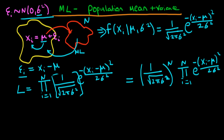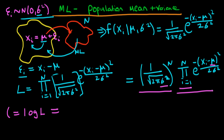When looking for maximum likelihood estimators for σ² and μ, it is easier to maximize the log-likelihood, because the log of a product becomes a sum. So I write ℓ (little l) equal to the log of L (big L). From our log rules, log(a × b) = log(a) + log(b), so the product becomes a sum.